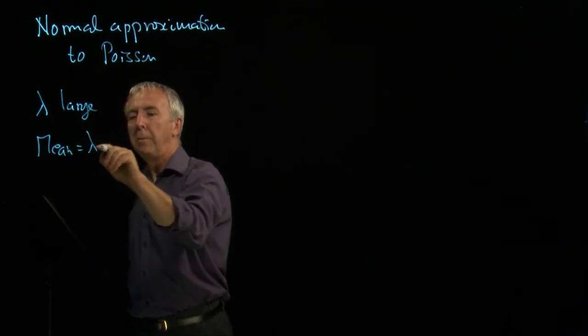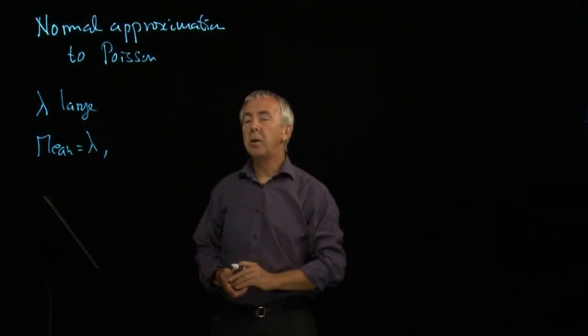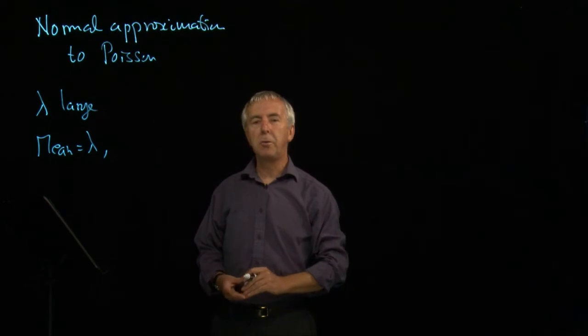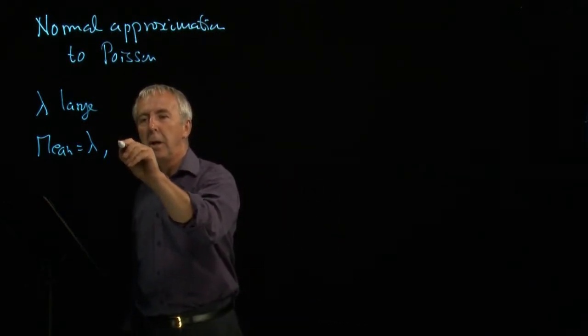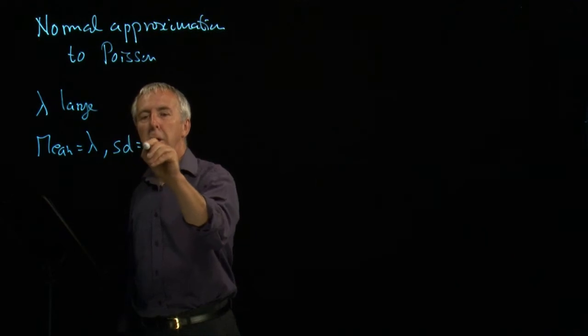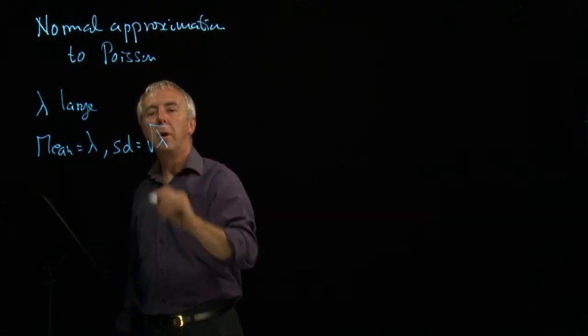So the mean equals lambda. And it turns out that the variance of a Poisson distribution is lambda, and so the standard deviation is the square root of lambda.